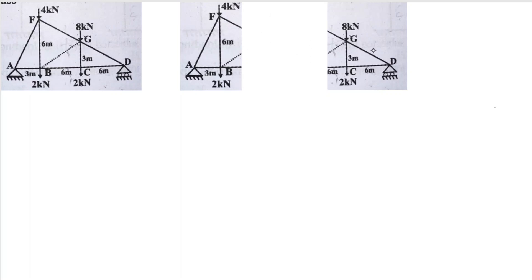After choosing this section, we divide the truss into two parts and then analyze one part. We check each equilibrium equation and see which equilibrium equation we can solve easily.